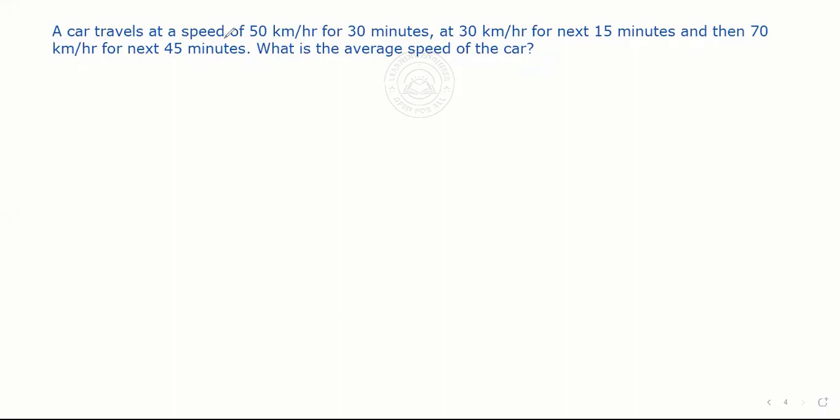A car travels at a speed of 50 km per hour for 30 minutes, at 30 km per hour for next 15 minutes, and 70 km per hour for next 45 minutes.